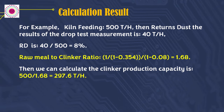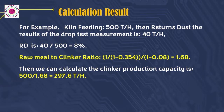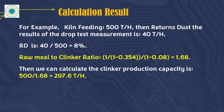For example: kiln feeding is 500 tons per hour, and dust returned from the drop test measurement is 40 tons per hour. So Rd = 40 ÷ 500 = 8%. Raw meal to clinker ratio = 1 ÷ (1 − 0.354) ÷ (1 − 0.08) = 1.68. Then clinker production capacity = 500 ÷ 1.68 = 297.6 tons per hour.